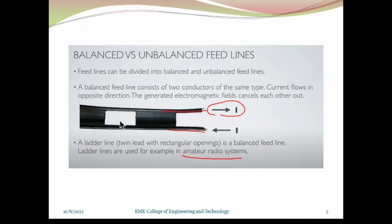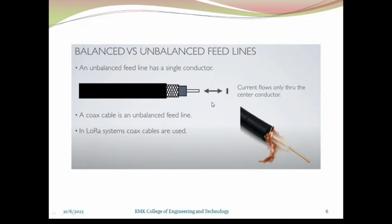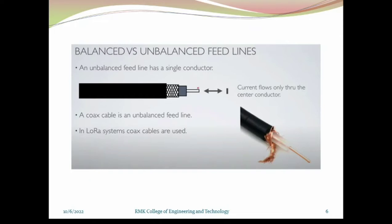What do you mean by unbalanced? In the coaxial cable, we have only one conductor at the center — that is a single conductor — and this is a shield. Current flows only through the center conductor. So coaxial cable is the main example for unbalanced feed lines, and it is used in LoRa systems.